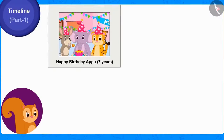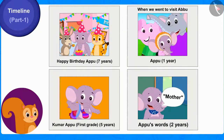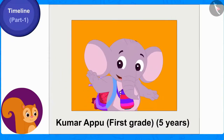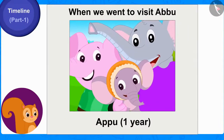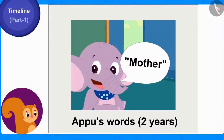Chanda removed four photos from Appu's album. In the first picture, Appu is celebrating his seventh birthday. In the second, Appu was in first grade. The third picture was taken when Appu was one year old and his parents had taken him on a trip to Abu. And the last picture was taken when Appu first started speaking the word 'Mother' at the age of two.